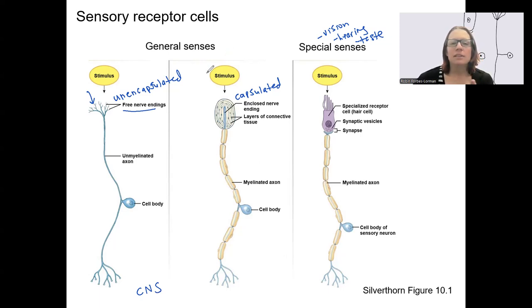This type over here is capsulated. This is still for different types of touch. We'll see examples of what types of touch, meaning like stretch versus vibration, different types of touch that have different layers of connective tissue around them that allow them to respond to different stimuli based on the shape of this thing here. So they're more specialized. We'll get into examples of that.